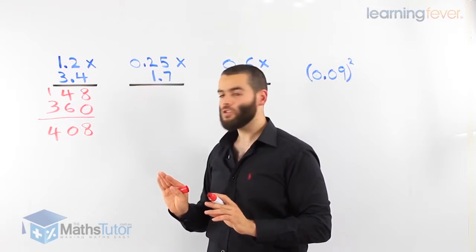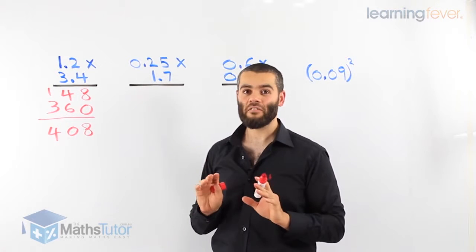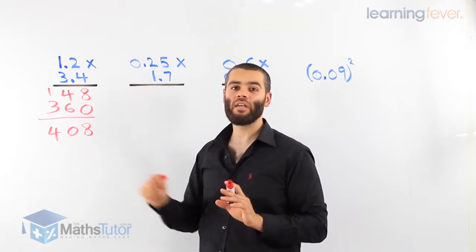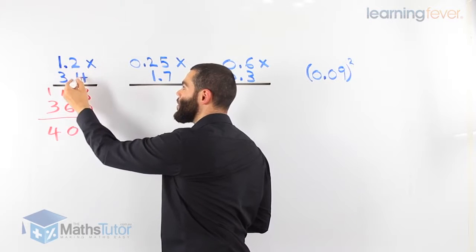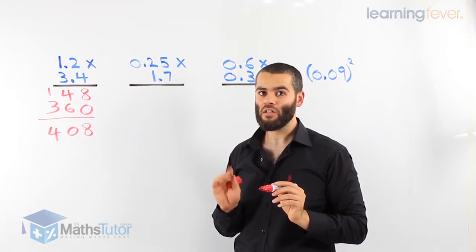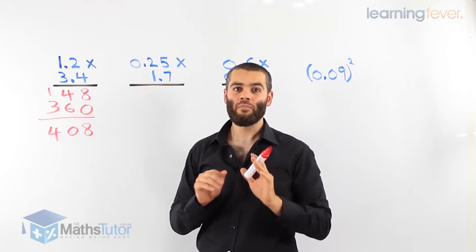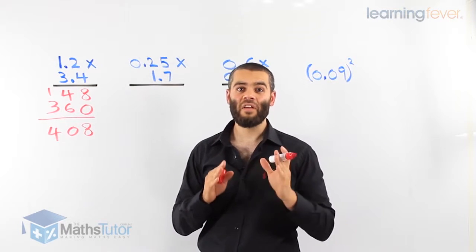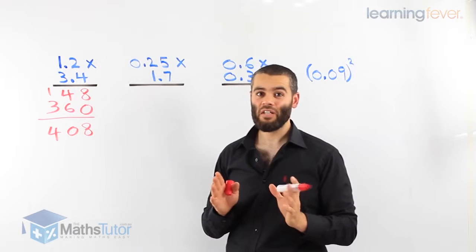Now that we've got a solution, we need to go back and follow a certain rule. The rule says that whatever number of decimal places are in the question have to be in the answer. Before I move on, remember: decimal places are different to decimal points. I've had too many students mix up decimal points and decimal places. Decimal places are numbers that come after the point.